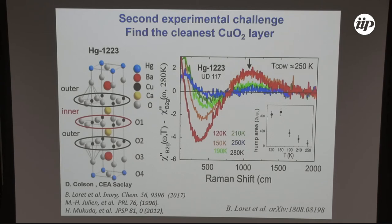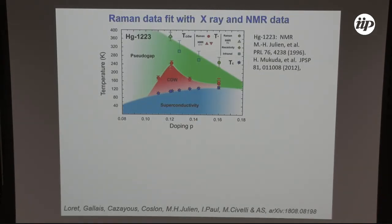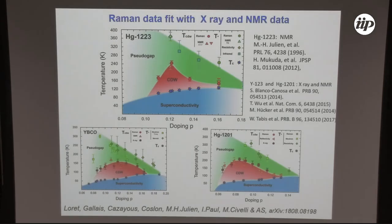We reproduced this experiment at several doping levels. Plotting the onset temperature of the charge density wave for different dopings, the red data points show a dome-like shape. We verified that our measurements correspond to NMR measurements detecting charge density wave order in this material — where no X-ray diffraction data yet exists. We also applied the same procedure to YBCO and mercury-1201, finding onset temperatures at two different doping levels that fit perfectly with the existing X-ray diffraction and NMR measurements.